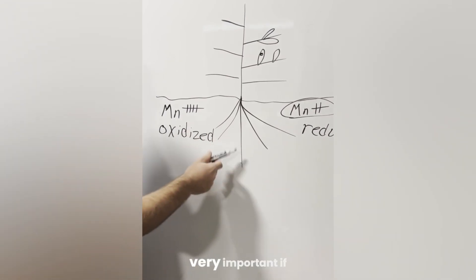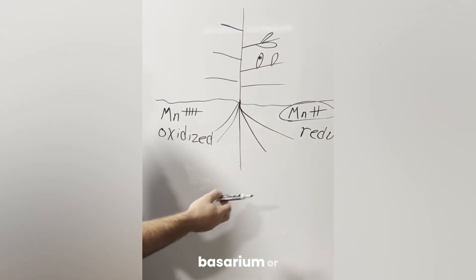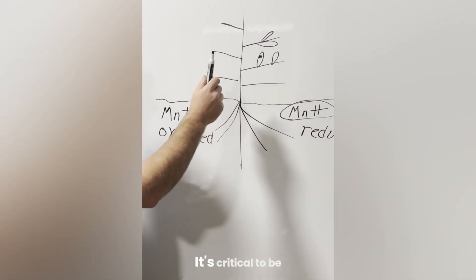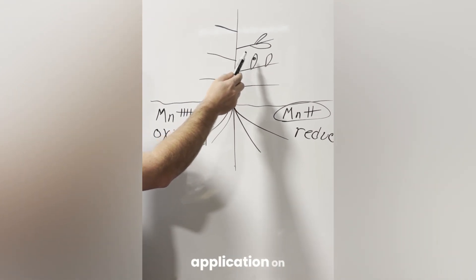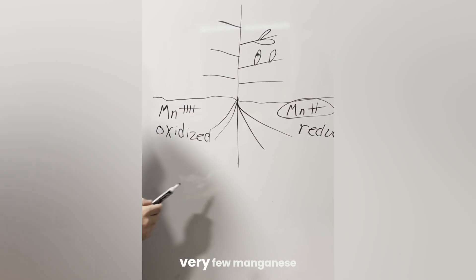And this is very important. If you have root diseases such as Fusarium or Rhizoctonia that are associated with manganese, it's critical to be able to put on a manganese application on the foliage and get it down to the root system. And there's very few manganese products that are capable of delivering that result.